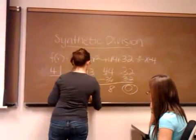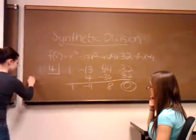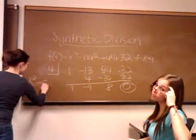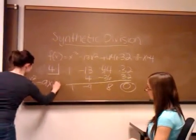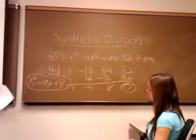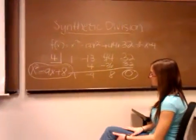That's our remainder there. And then, our answer would be x squared minus 9x plus 8. Okay? So it is a factor of f of x. It is a factor of f of x.